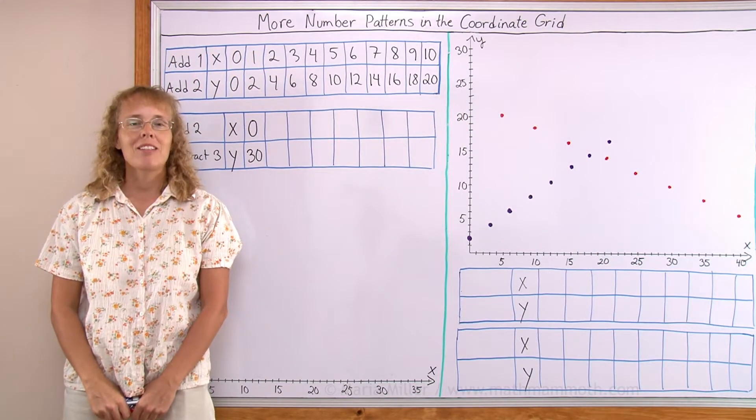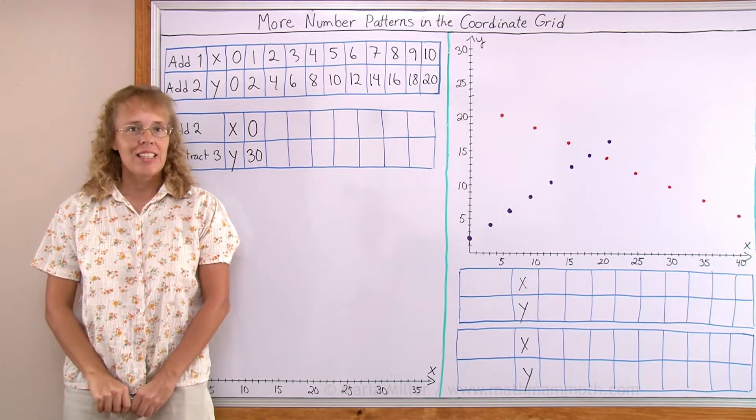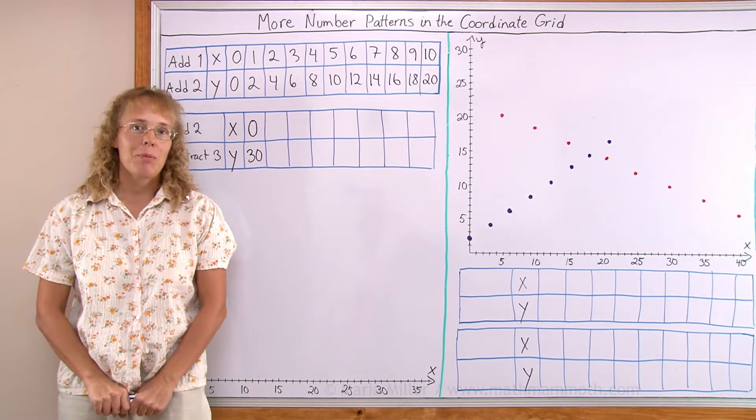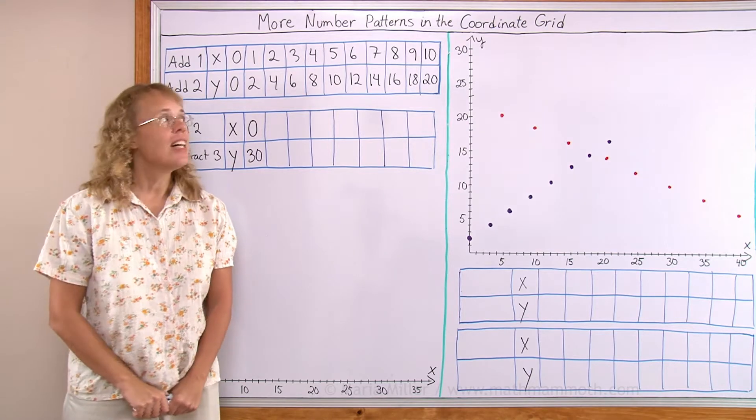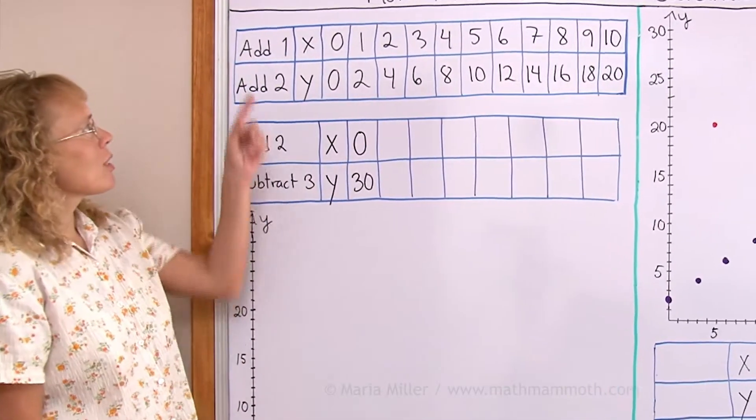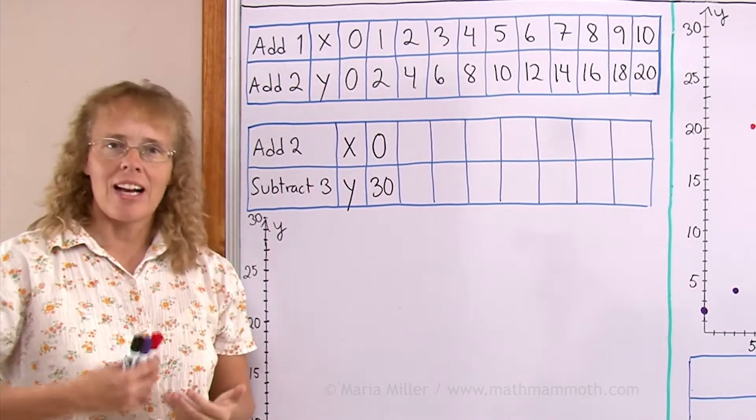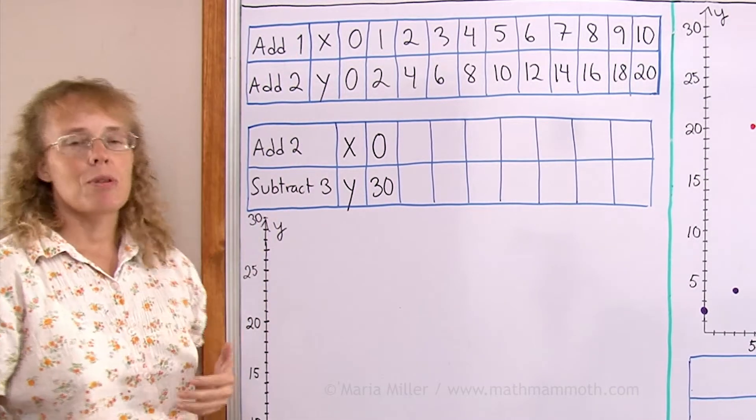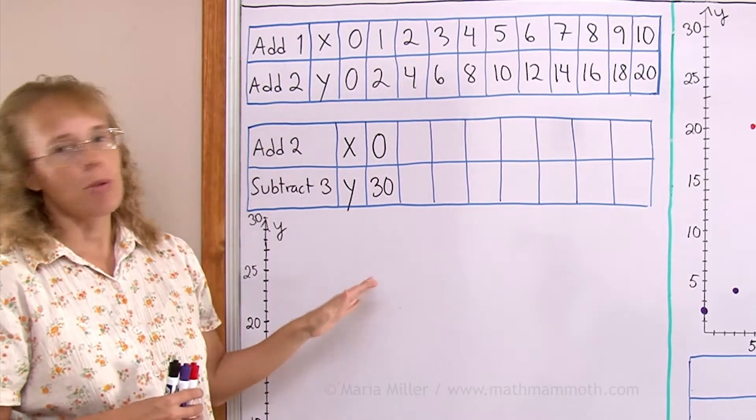Hello! My name is Marianne Miller from MathMammoth.com. In this video we're going to study some more number patterns in the coordinate grid. This time we're going to look at patterns where we are given a rule like add 1 and add 2. We're going to make number pairs and plot the points here.